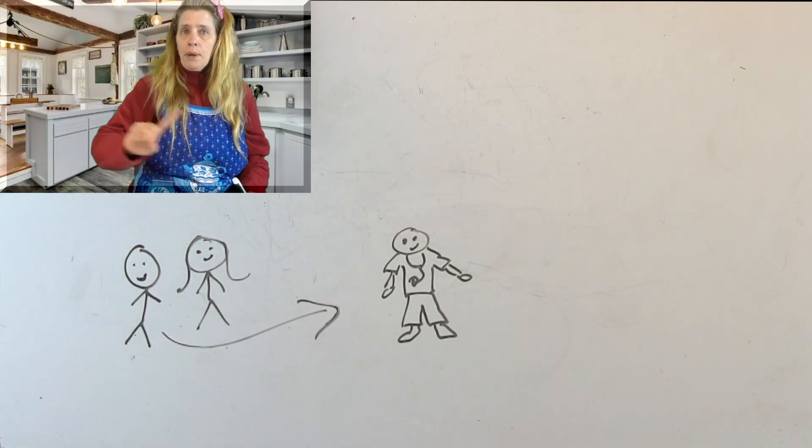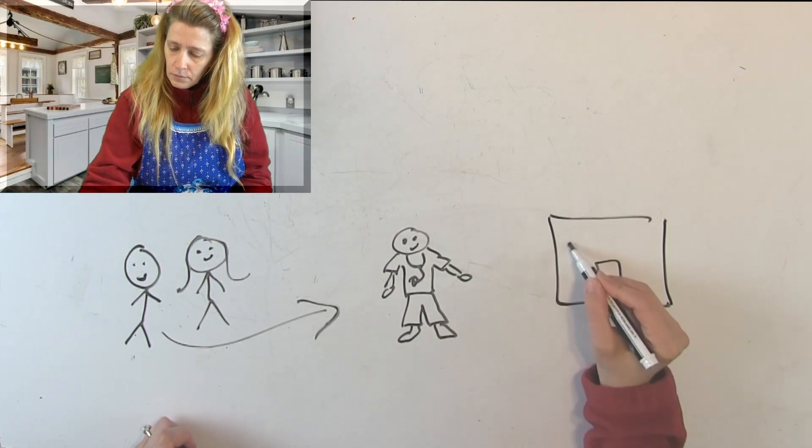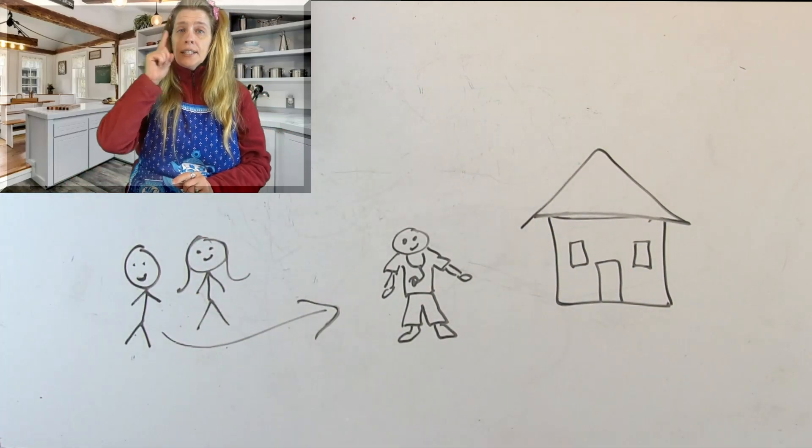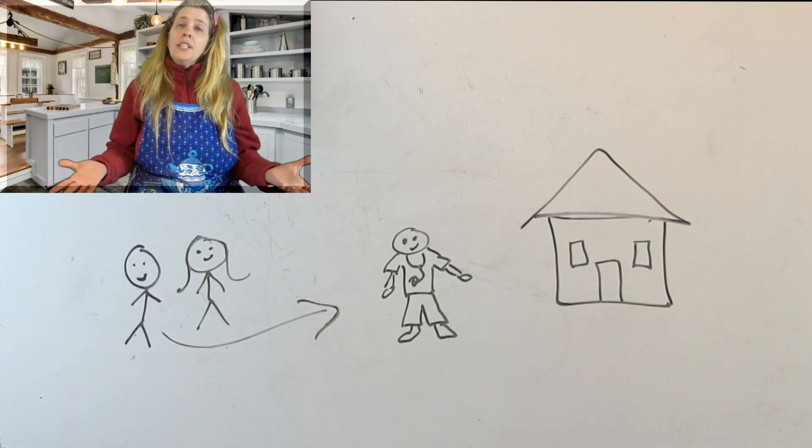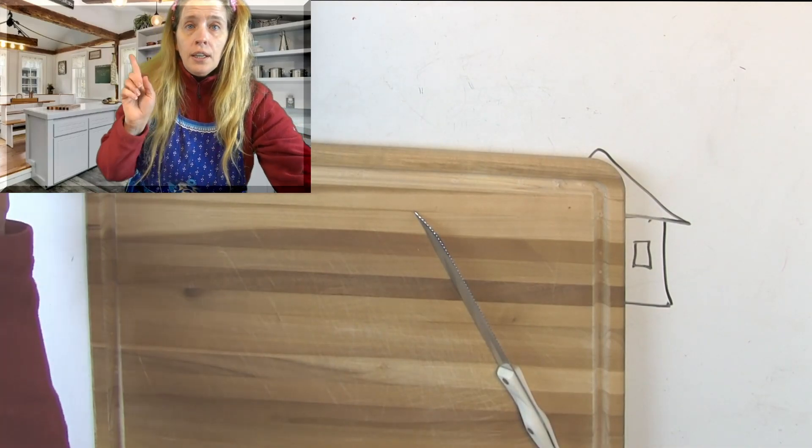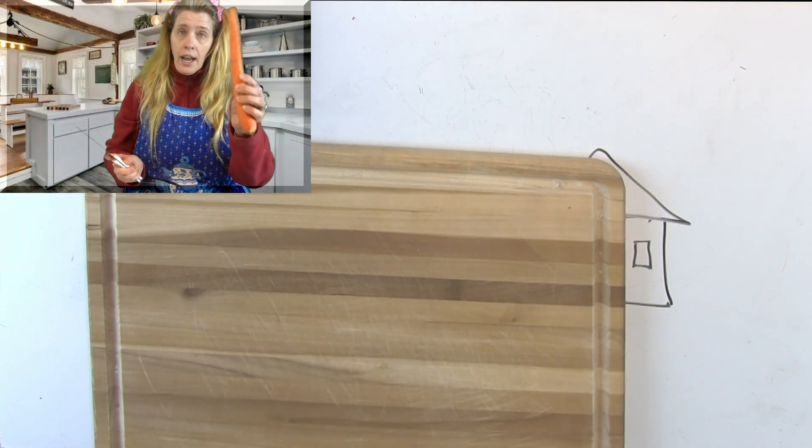So he goes home. So the man, he goes home. And he sees his wife and she's standing at the kitchen counter. And he sees that she is cutting carrots, just like I am right now.